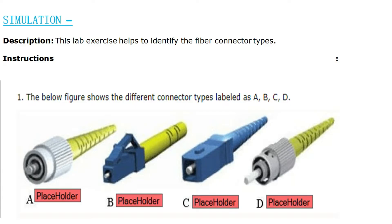The below figure shows the different connector types labeled as A, B, C, and D. As you can see in the picture, this is the first connector type labeled A, the second labeled B, the third labeled C, and the fourth labeled D. In the actual exam, you have to select the correct fiber connector name and drop it on the correct placeholder.